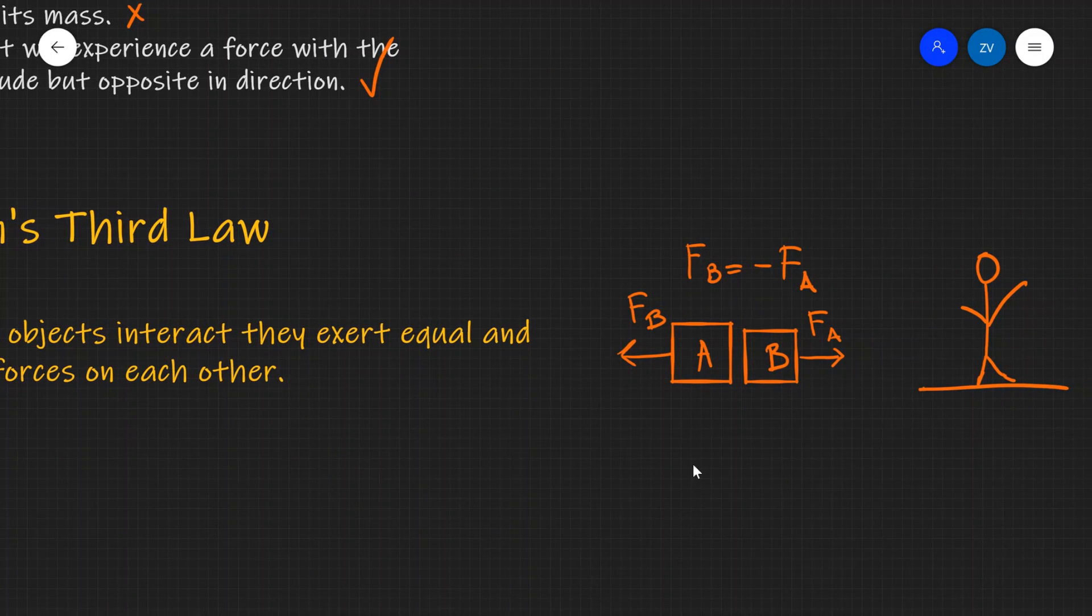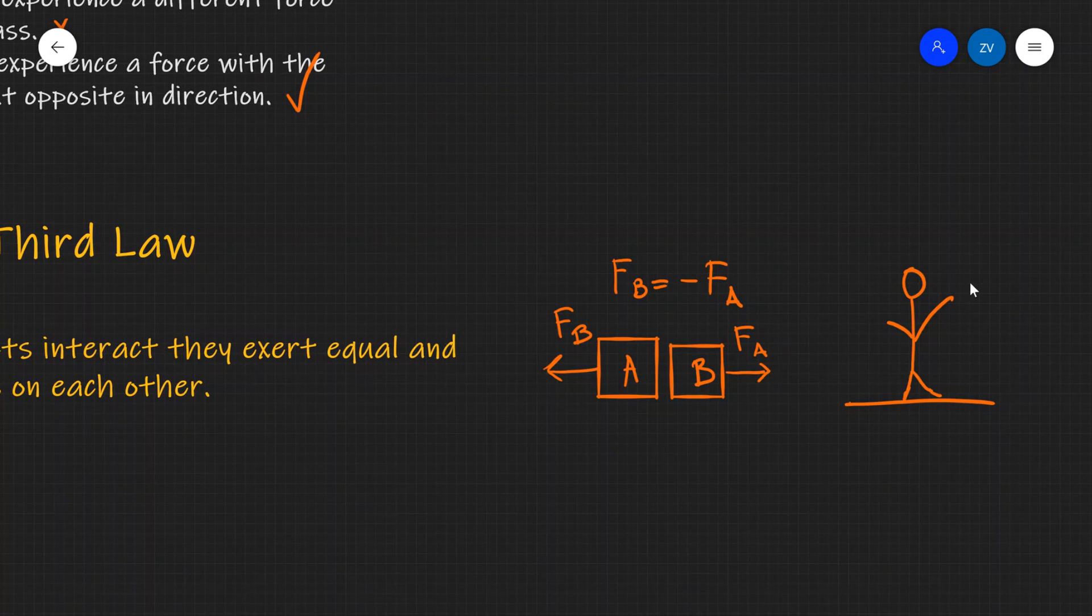I mean something as mundane as walking is only possible due to Newton's third law. The reason why we can go up and also forward is because we push the ground so in order to walk we have to push down with our feet and in turn the ground pushes back at us allowing us to actually walk.